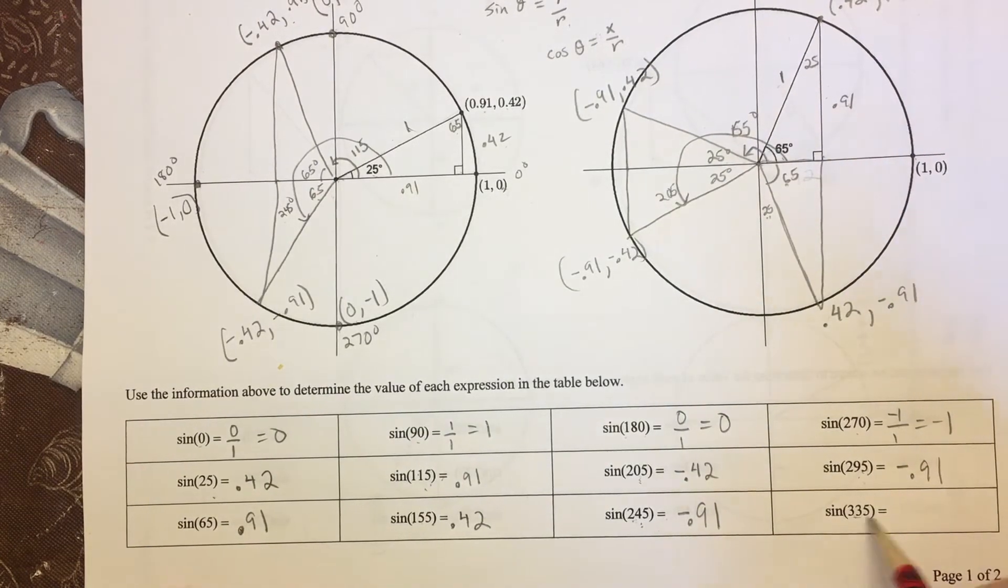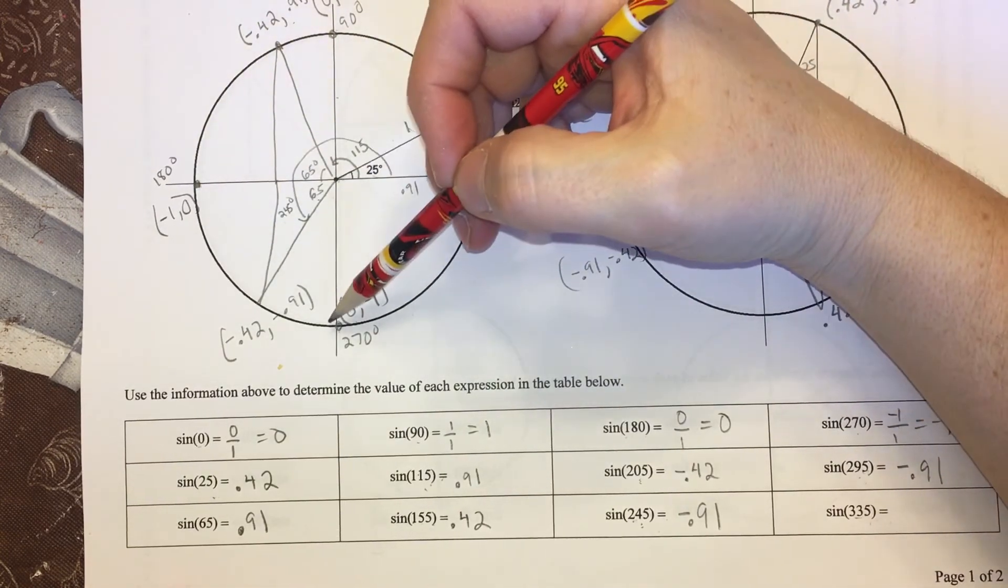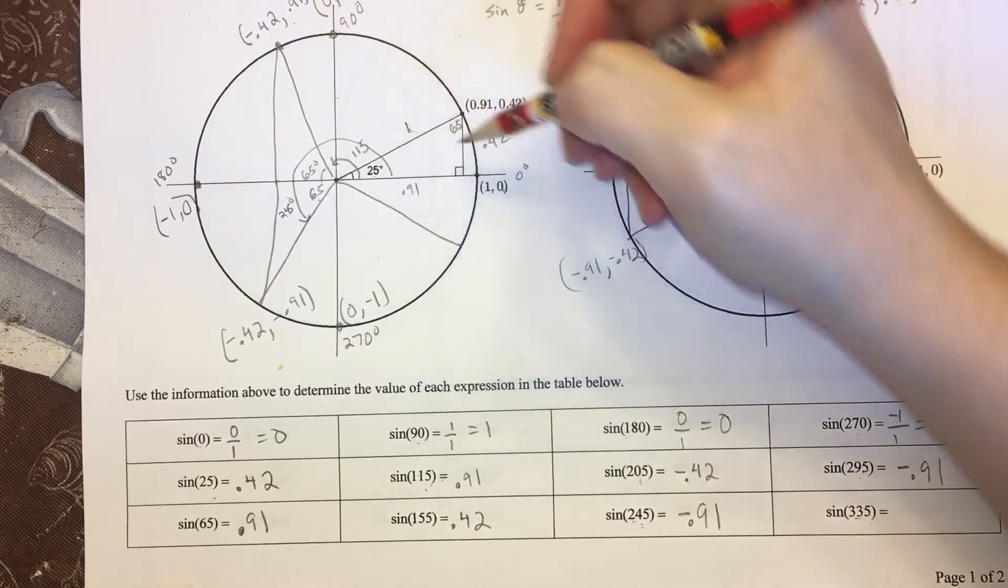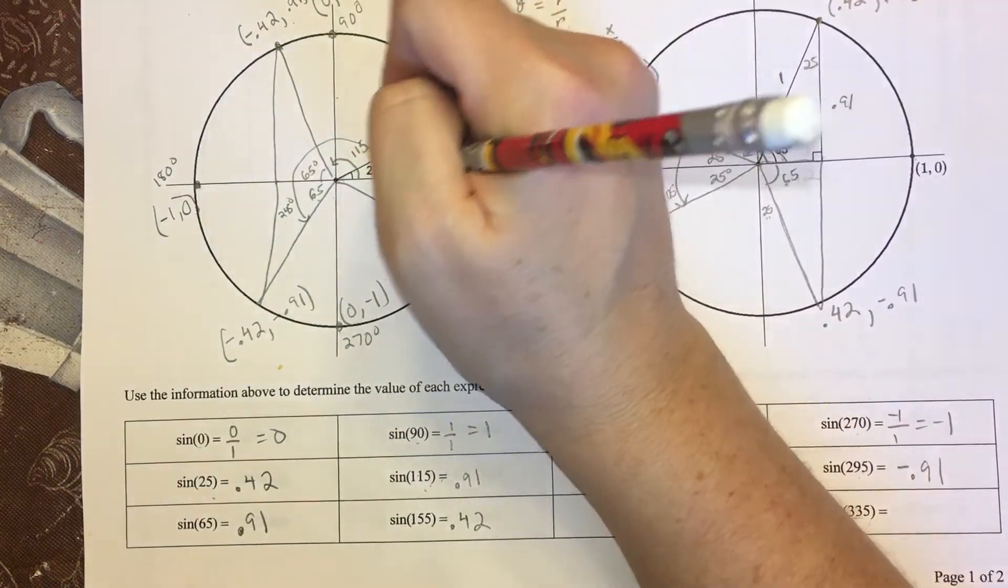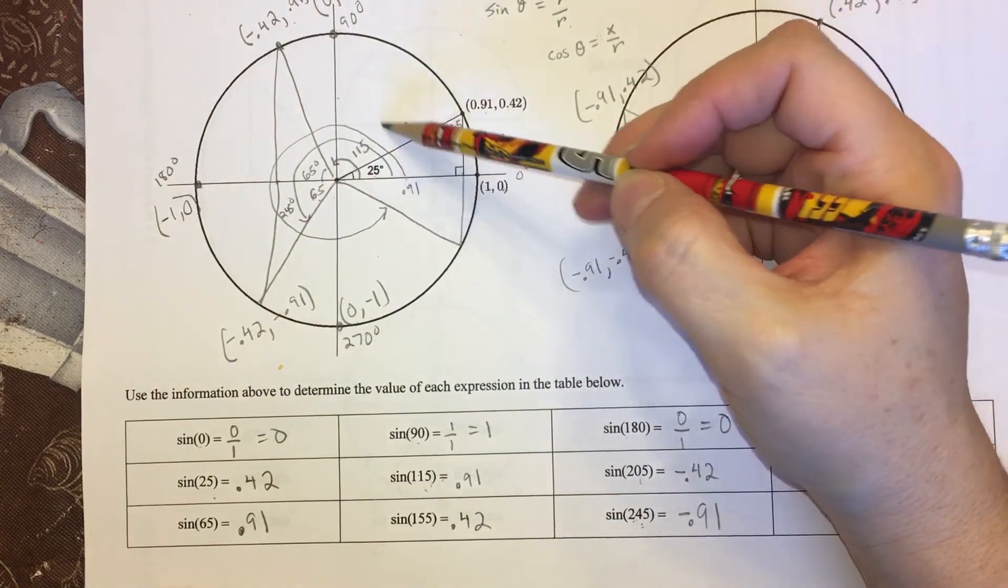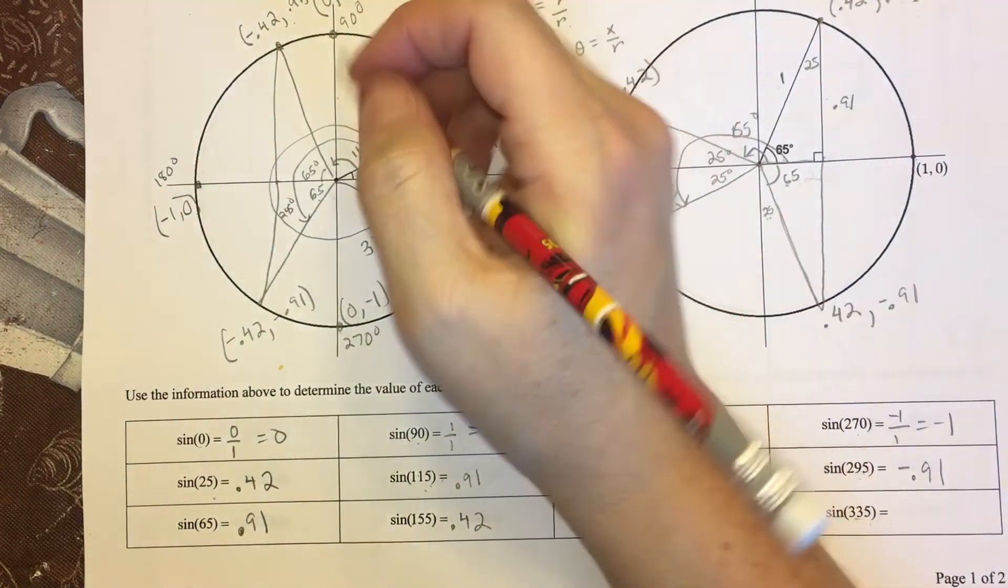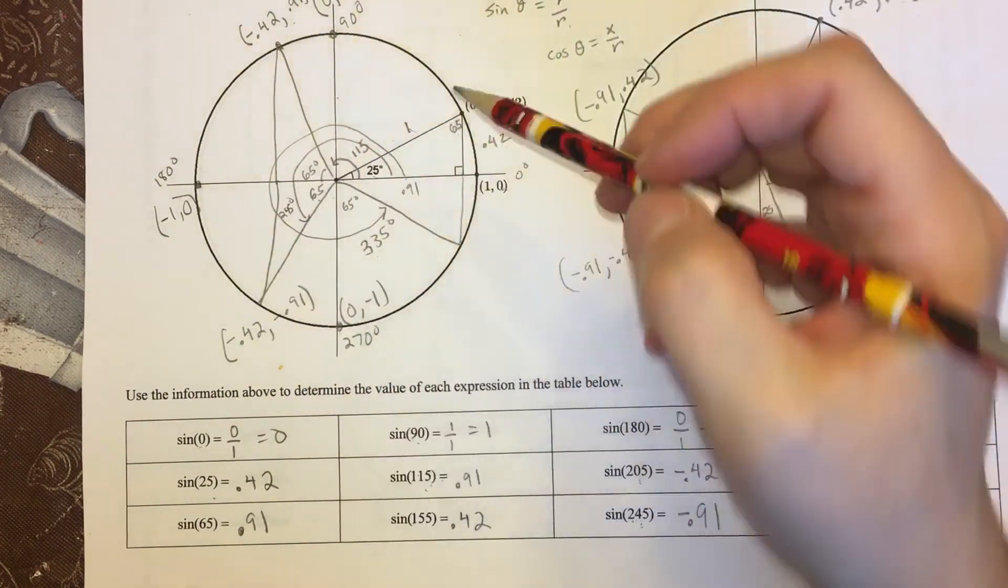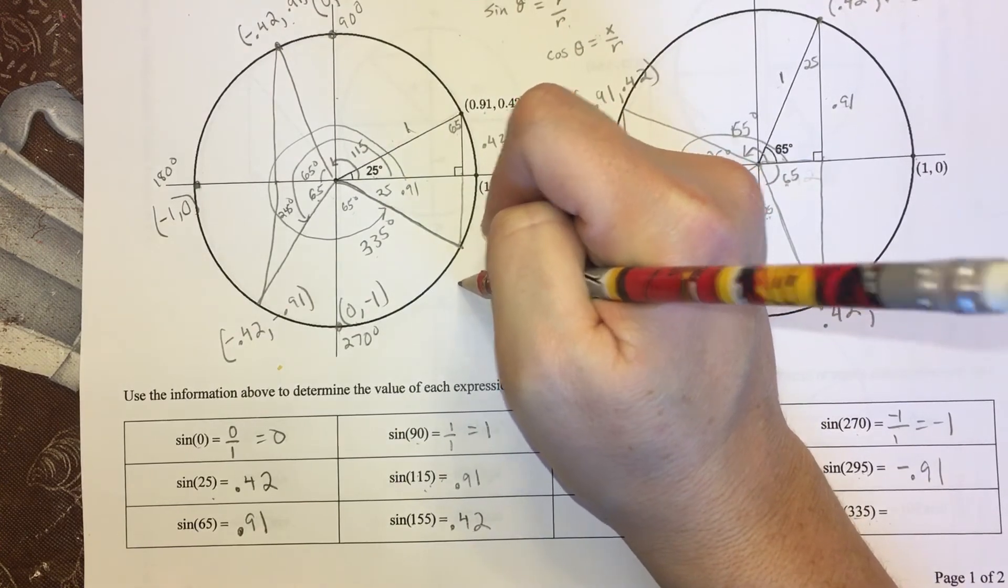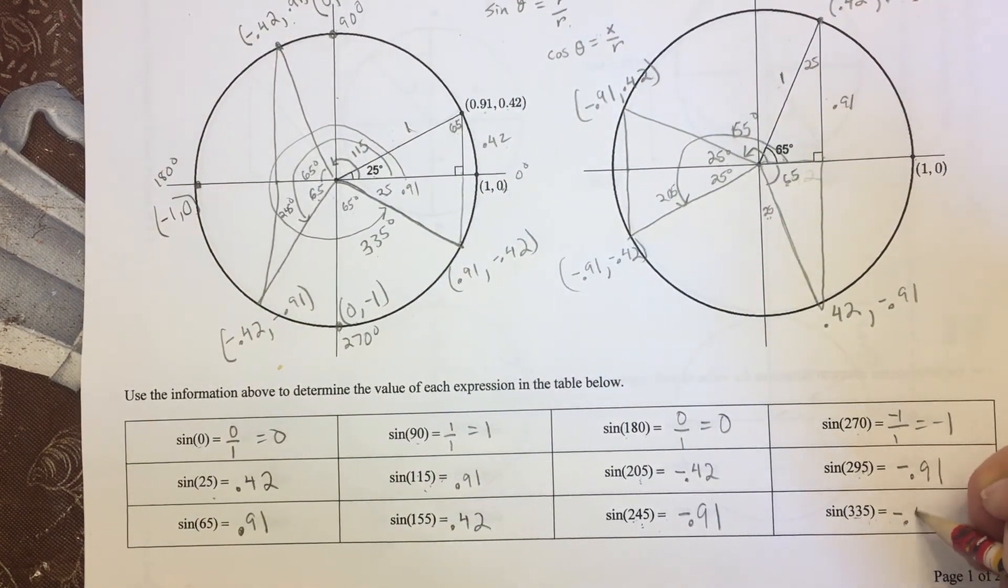All right, one more to go: sine of 335. So I'll draw it over here. So 0, 90, 180, 270 plus an additional 65—that'll be like, oh, put it here. So then this whole angle from here going all the way around to here is 335. And the reference angle—now even though I added another little 65 here, remember that is not the reference angle. Reference angle is between the terminal ray and the x-axis, which is 25. So that's going to be (0.91, -0.42). Sine is y over r, so my last sine value is going to be -0.42 divided by 1.